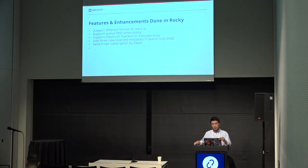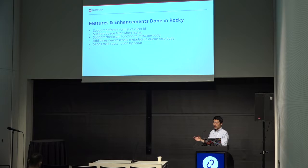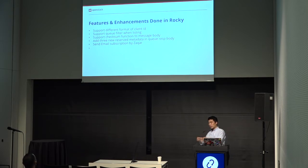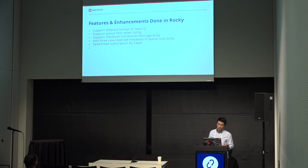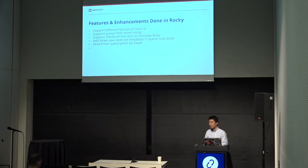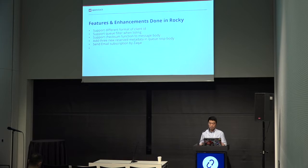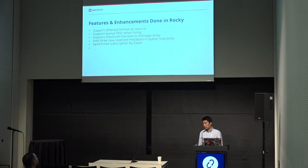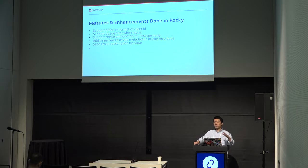For the features and enhancements done in Rocky: first, we can support different formats for the client ID. When you use Zaqar to consume messages from a queue as a client, you have to specify your client ID to differentiate yourself from other clients. Before, we could only use a traditional UUID. But currently you can use a different format, with a minimum and maximum character limit set in the configuration file. We also added support for queue filtering when listing queues, and a checksum function for the message body for better security.